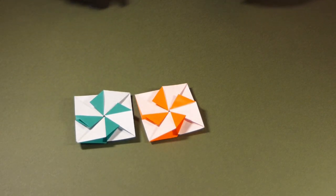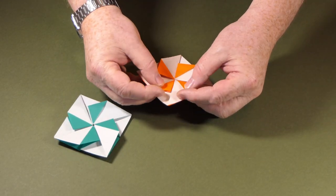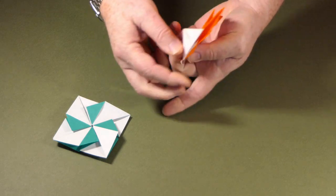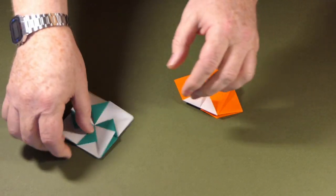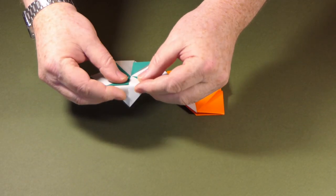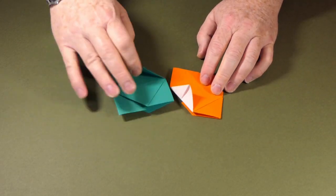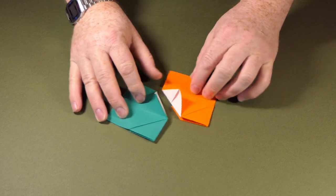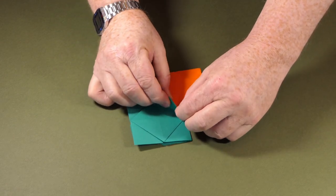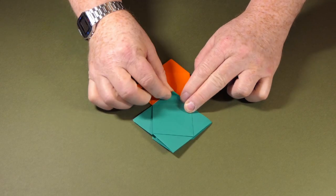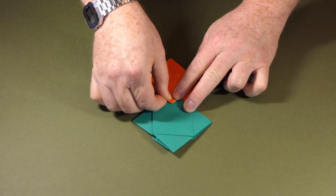And to join two together, we just fold one of these points back like this on each of the modules. And if we turn these points over, we just hold them together and we very fold.